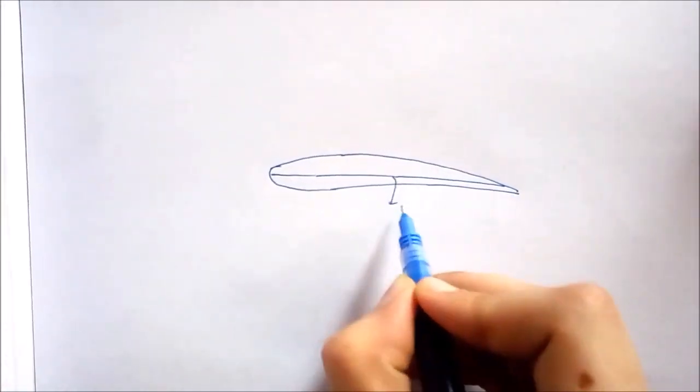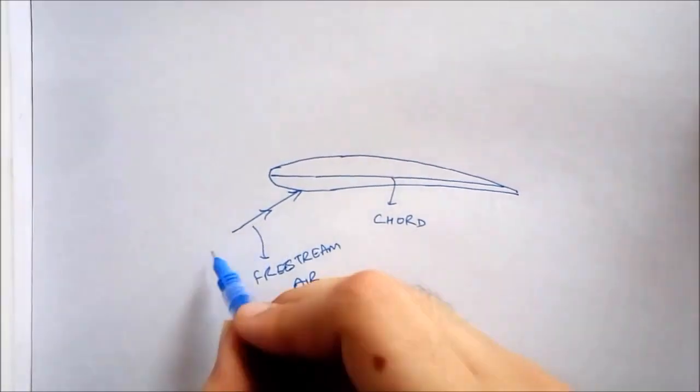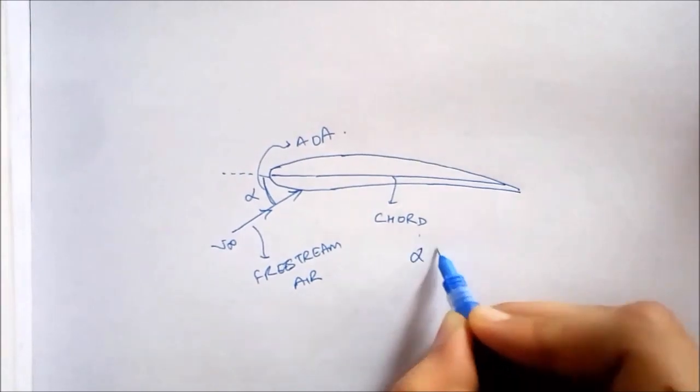More the angle of attack, more is the lift, generated up to a certain limit. This certain limit is the critical angle of attack where the aircraft stalls. I will discuss about stalls in another video.